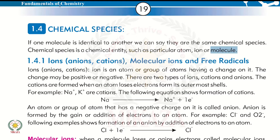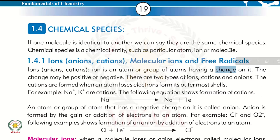Ions can be anions or cations. An ion is an atom or group of atoms having a charge on it — positive charge or negative charge. The charge may be positive or negative. There are two types of ions: cations and anions.